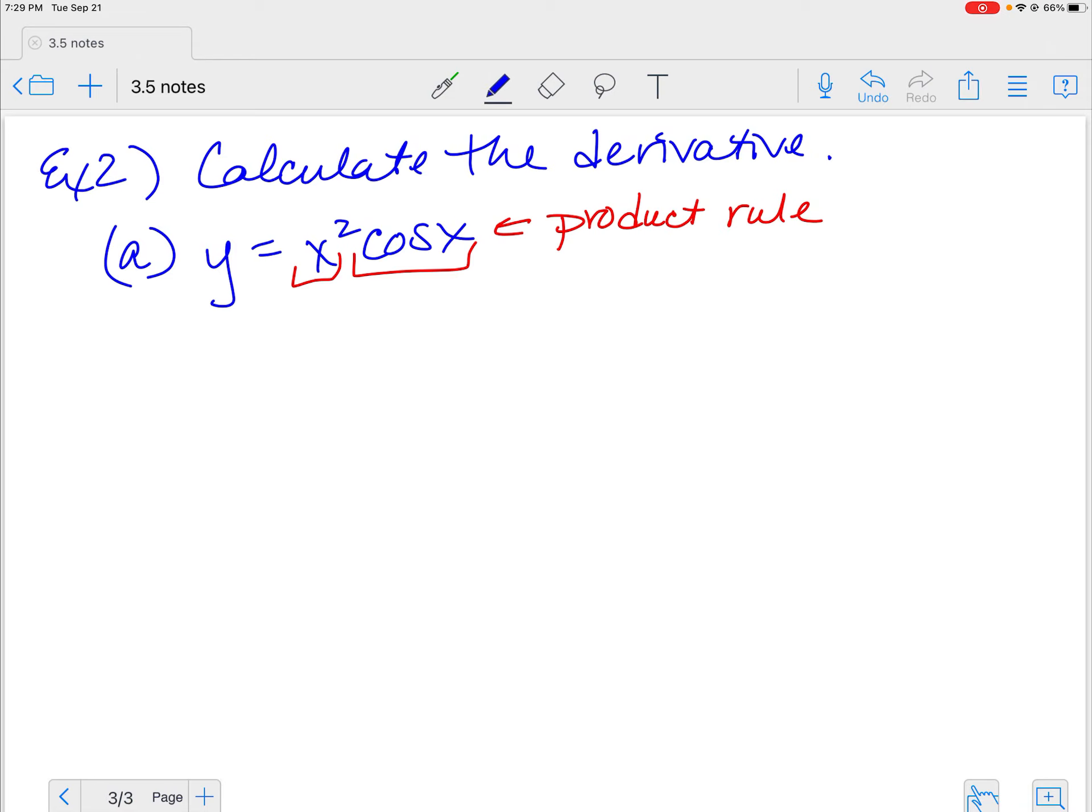So let's do this thing. The process is the same because it's a process. The process is the same. It doesn't matter what you have. If it's trig, if it's polynomials, if it's whatever you're looking at, it's still the process of the product rule.